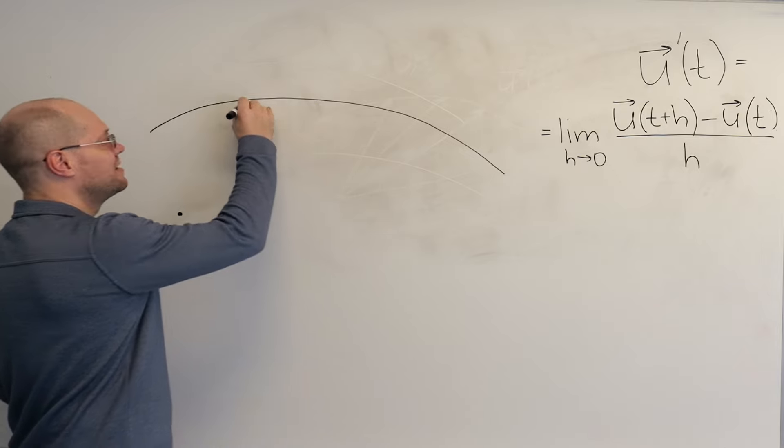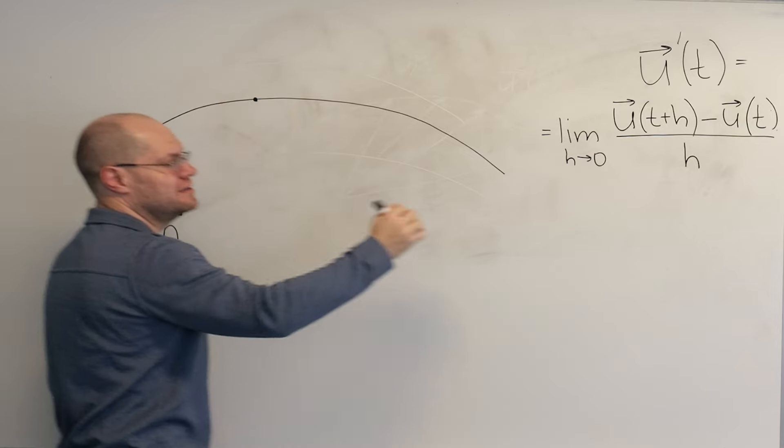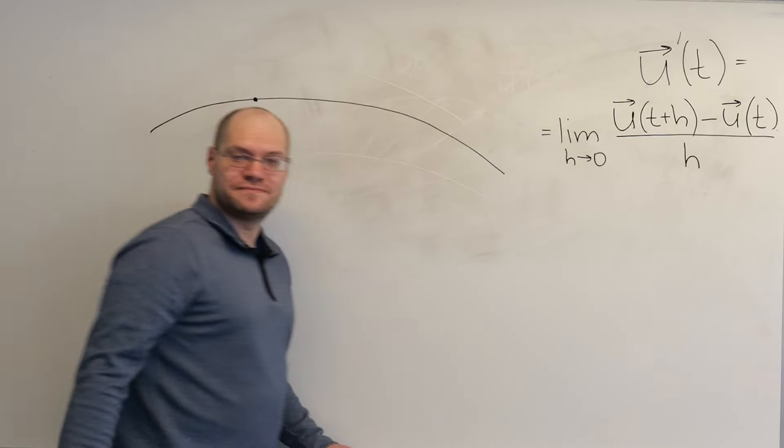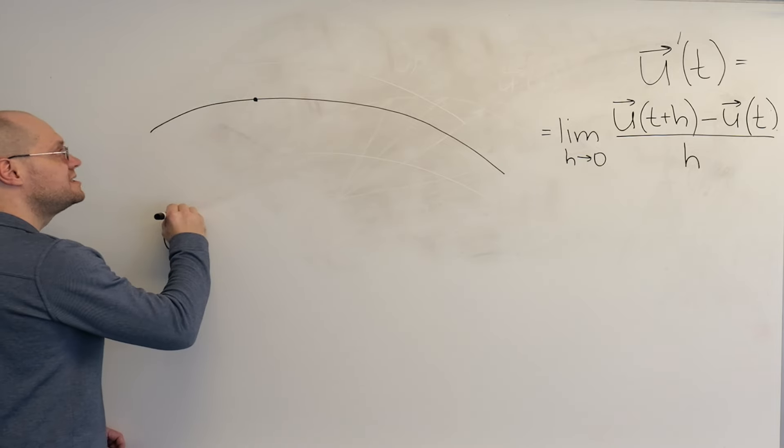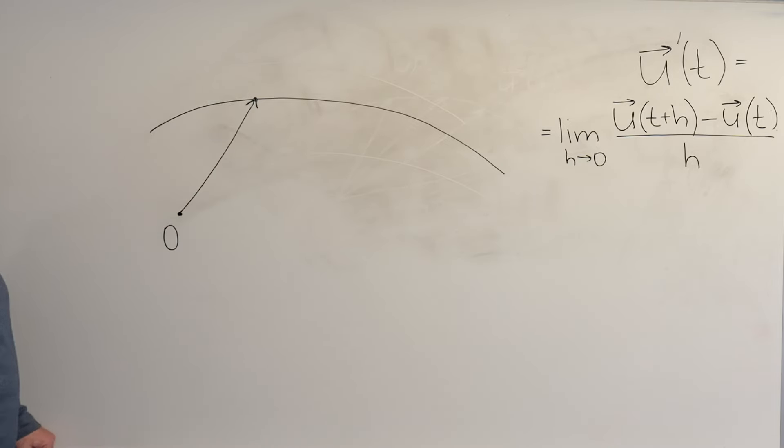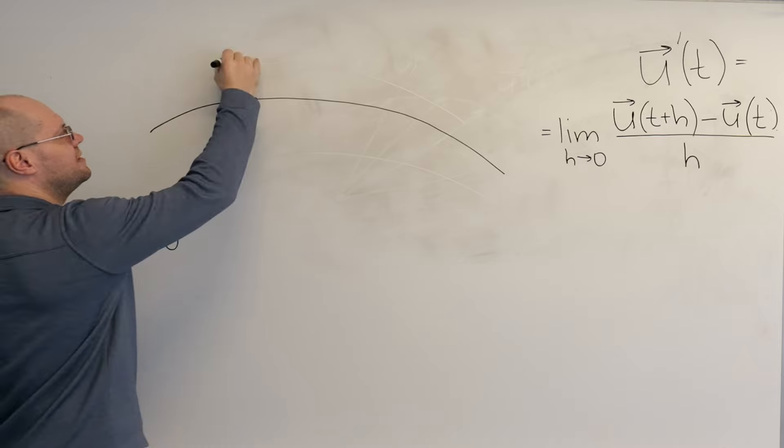We have our arbitrary origin. Now let's pick this point and say it corresponds to this value of t. And then our u(t) is right here. So this would be u(t).